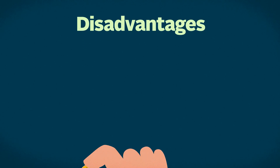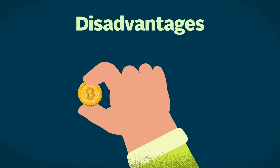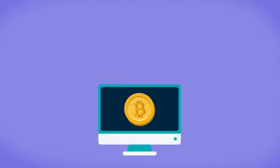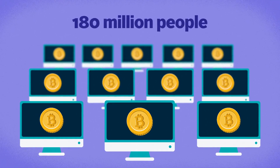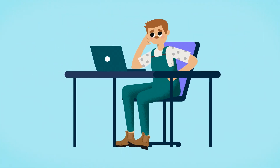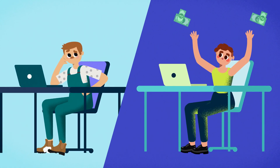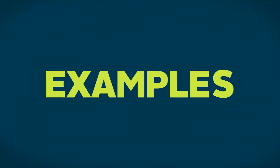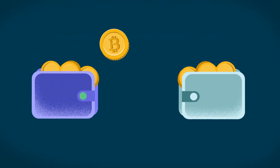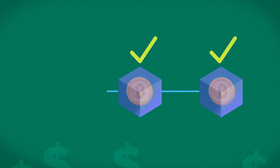Disadvantages: Since Bitcoin was first created, the number of users transacting on the network has increased exponentially to more than 180 million people. The growing demand means that users must wait longer for transactions to go through, with those willing to pay higher transaction fees receiving priority. For example, if you send Bitcoin from your wallet to another wallet at another exchange, the transaction will happen on-chain with a longer confirmation time and higher transaction fees.